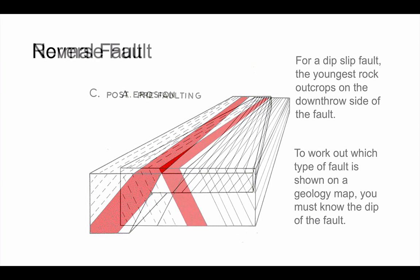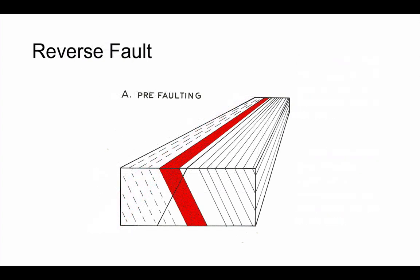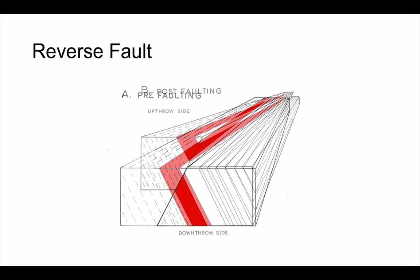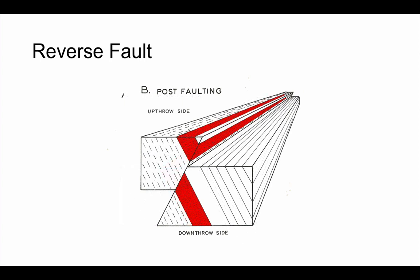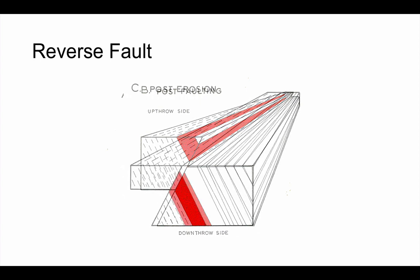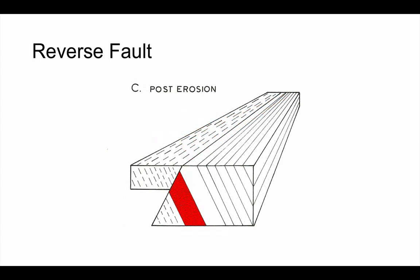If we contrast that with a reverse fault, again, seen here before faulting. This time, though, that hanging wall is going to get upthrown, as we can see here, forming a fault scarp. And again, with erosion taking this off, we now see, again, different rocks either side of the fault. The younger rock, though, is still on the downthrow side of the fault.